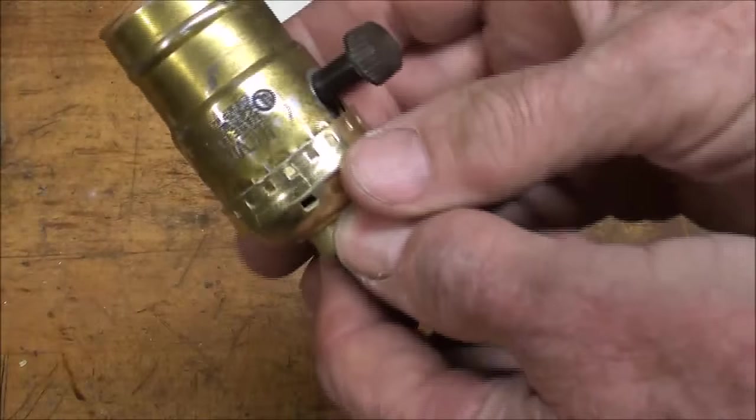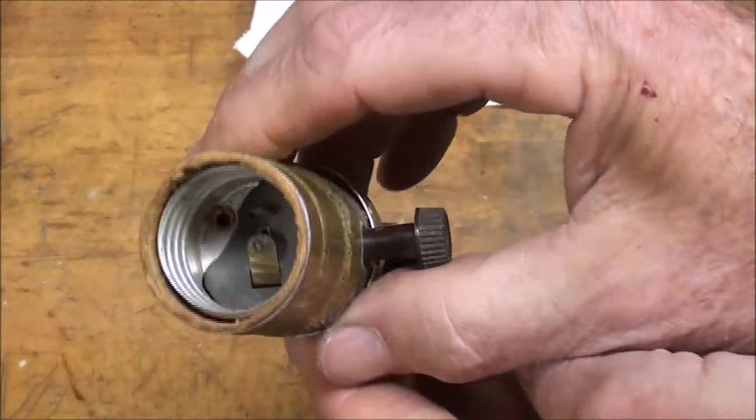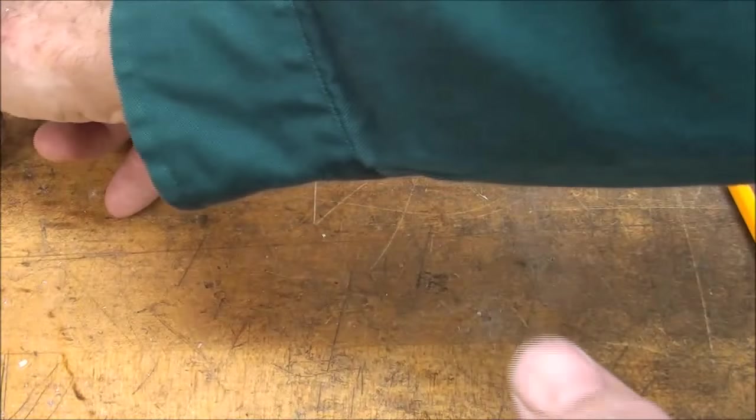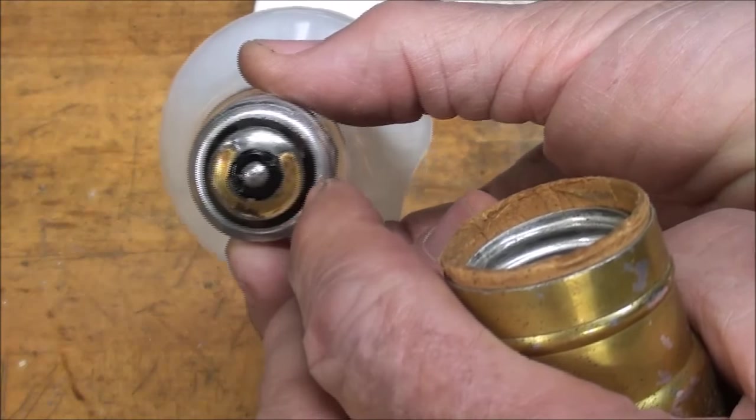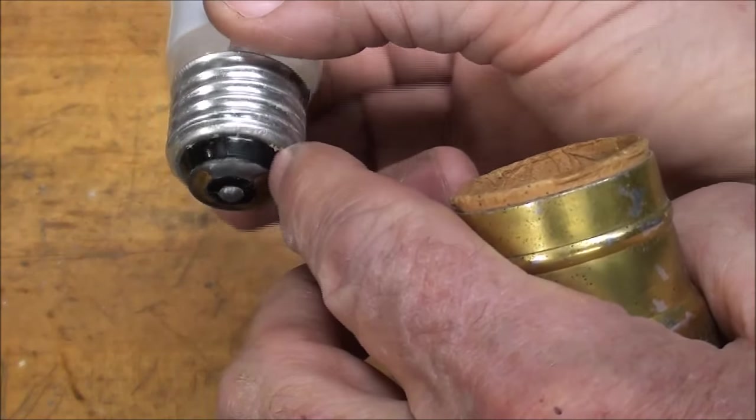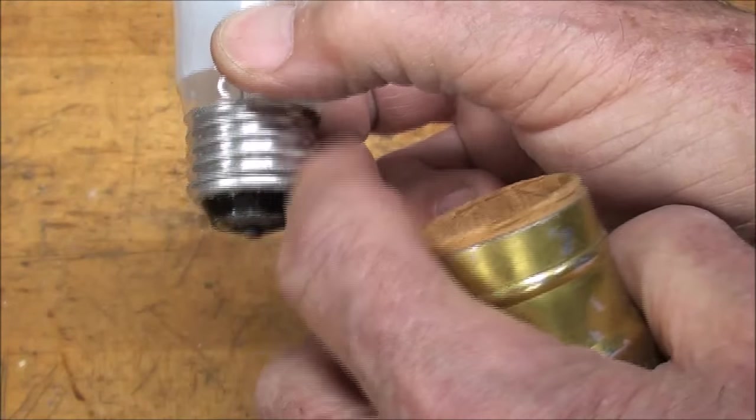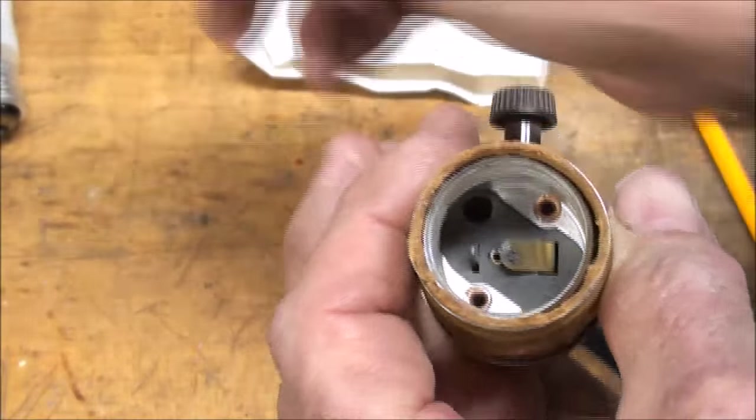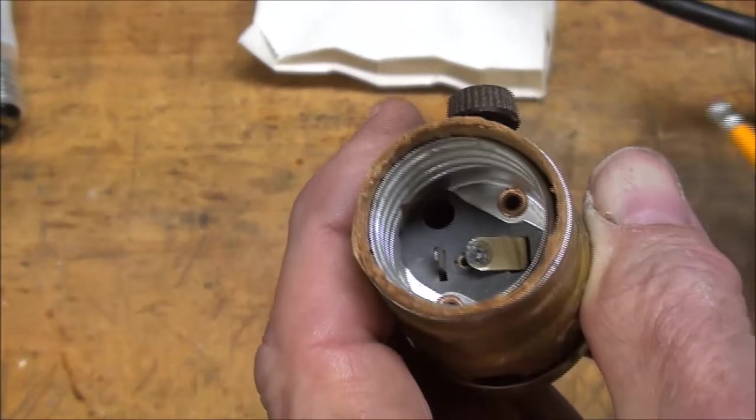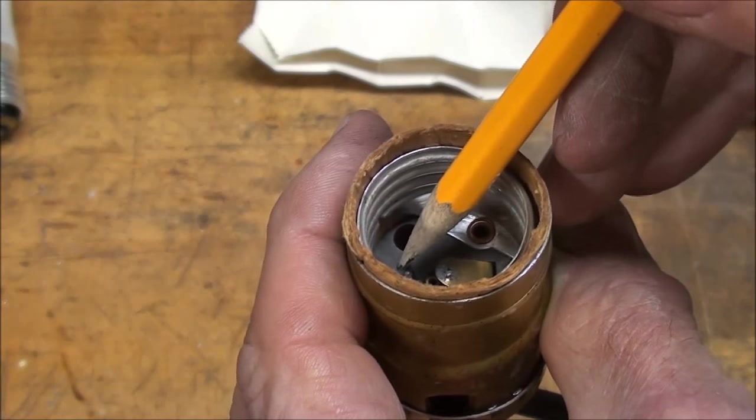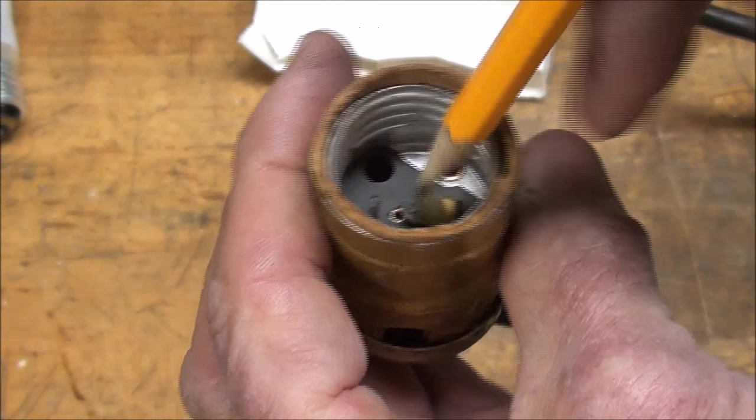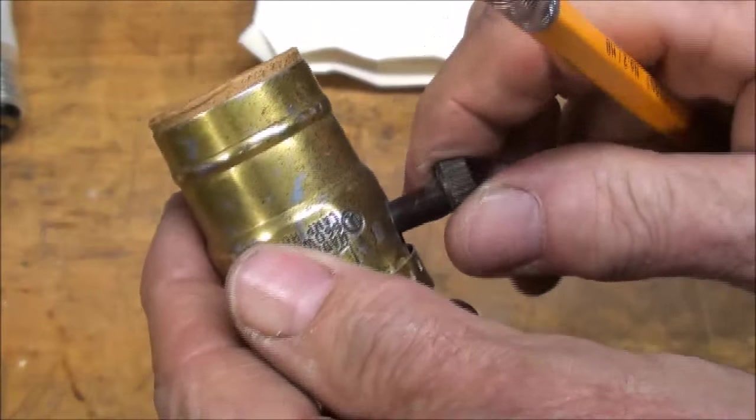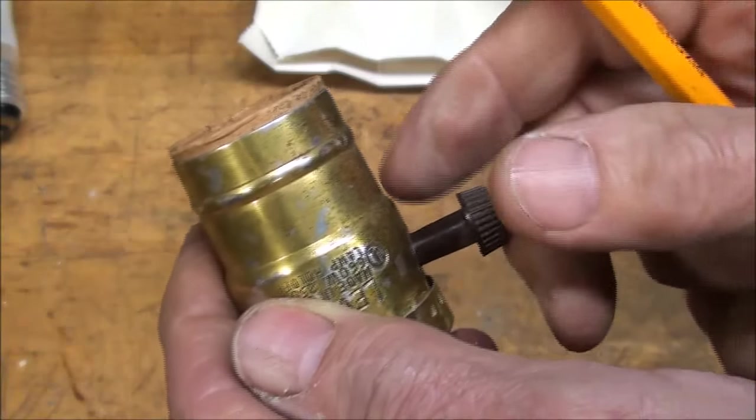You also, if you look at the socket, and these only work in a so-called three-way socket, if you want to get the advantage of both filaments. If you look here, you're going to see that there is three contacts right there in the middle, the button in the middle, and then the outer one here where there's solder, and then the thread itself. And similarly, when you look inside of here, you're going to see that we have a contact here right here in the middle like a conventional one, as well as the thread. And a one, two, three position switch.